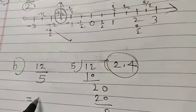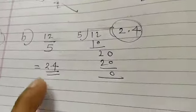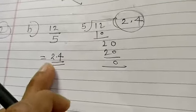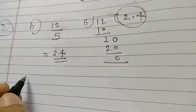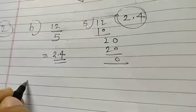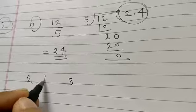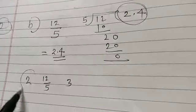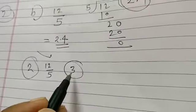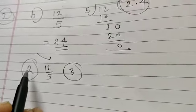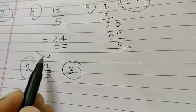What is the decimal representation? If you divide it, you get 2.4. Since 2.4 is more than 2 and less than 3, this number will lie between 2 and 3.